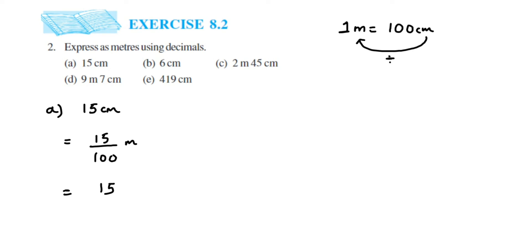From the right side, that is from the extreme end of the number, place the decimal point two places to the left. So: 5, then 1, then place decimal, then 0 — giving 0.15 meters. So just count the zeros in the denominator and move that many places from the right. So 15 centimeters equals 0.15 meters. The second question is 6 centimeters.